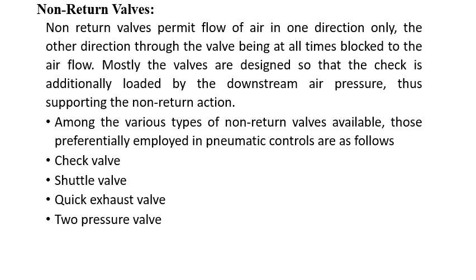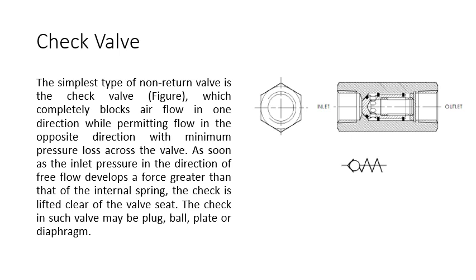The non-return valve allows flow of air in one direction only; the other direction is always blocked. These valves are designed so that the check is additionally loaded by the downstream air pressure, thus supporting the non-return action. Among the various types of non-return valves available, those preferentially employed in pneumatic controls are: check valve, shuttle valve, quick exhaust valve, and two-pressure valve. The simplest type of non-return valve is the check valve, which is shown in the figure — it has a spring-loaded moving component.